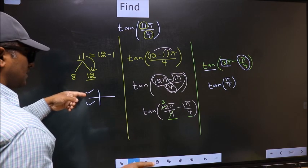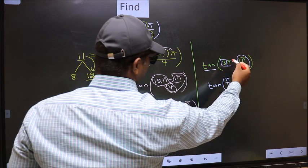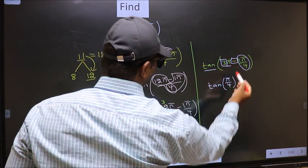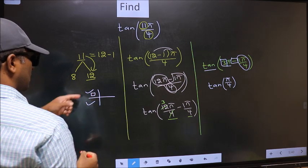And all the odd multiples of π they lie either in the second or in the third quadrant. So now to select the quadrant we should look at this symbol. Here we have negative.